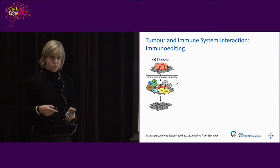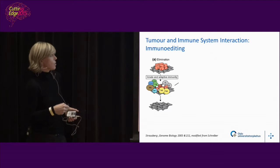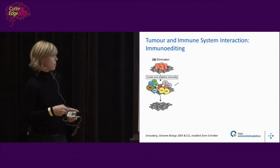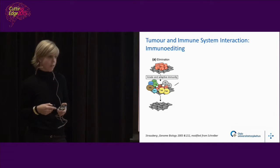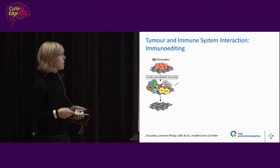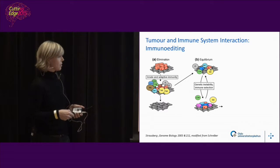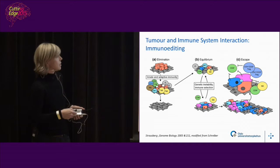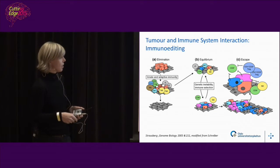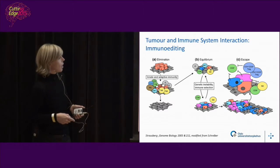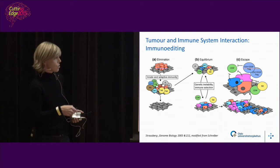The tumor and immune system constantly interact and affect each other. Normal cells are shown in gray and tumor cells in red. Lots of different immune cells will come and attack the tumor cells and eliminate them — this probably goes on in the body all the time, which is why we don't get cancer. At some point, some cancer cells change genetically, manage to avoid the immune system, and the tumor progresses — this is tumor escape. That is when we try to boost the immune system with immunotherapy and make it see the cancer cells again.